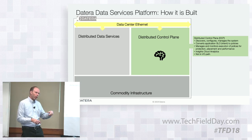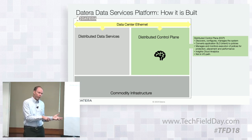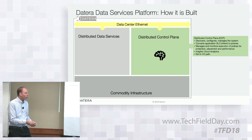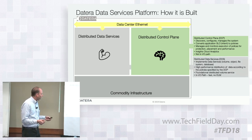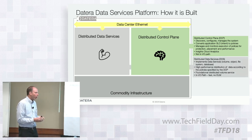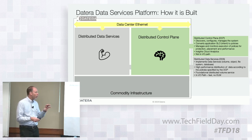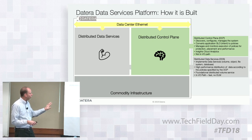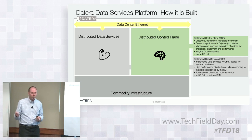And as it's monitoring the system, it can provide new placement maps for the data path. The data path is the brawn of the operation. Since it's not trying to figure out where data should go — it's simply placing data where the control path tells it — it's very, very efficient.